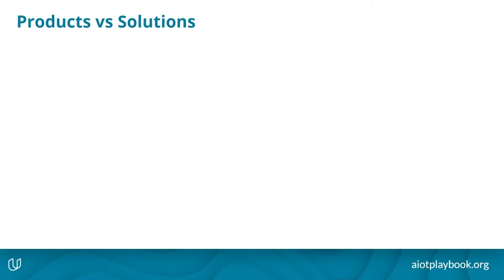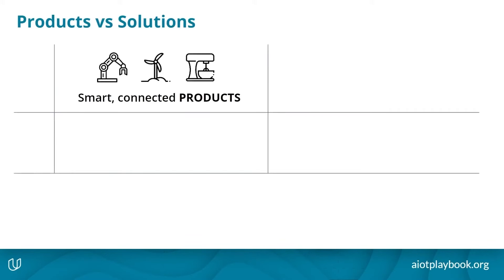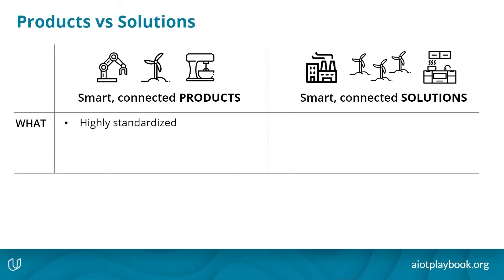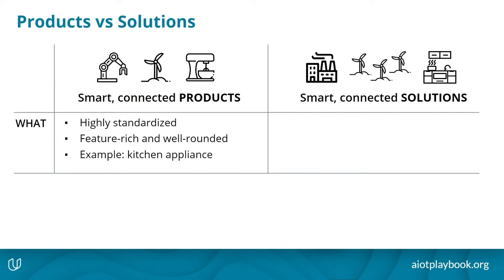Why are we differentiating between products and solutions in this context? Let's take a look at this together, starting with the smart connected product versus smart connected solutions perspective from a what point of view. Products typically are highly standardized, often sold at large volumes, so they need to be well-rounded and appealing to customers — typically very feature rich. A good example here would be a smart connected kitchen appliance sold by an OEM.